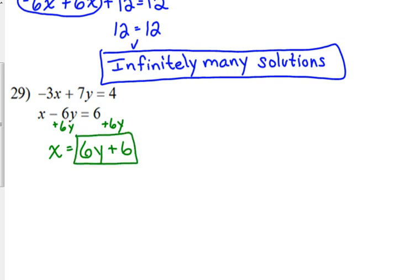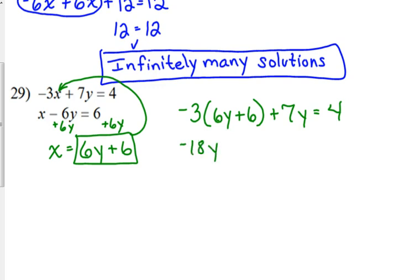We get x is equal to 6y plus 6, and then we can substitute this expression for x in the other equation. You always want to use parentheses because usually there is something that needs to be distributed. So we've got negative 3 times 6y plus 6 plus 7y equals 4. Distribute the negative 3 to get negative 18y minus 18.